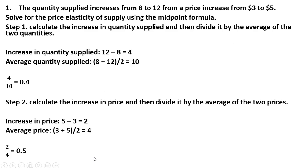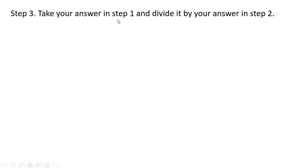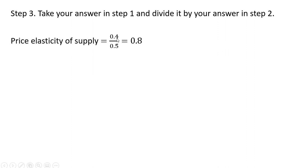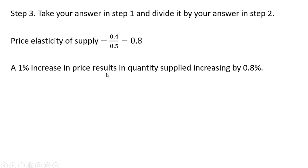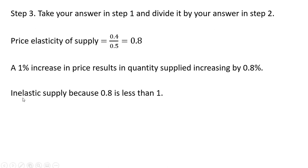In the final third step, we take the answer from step 1 and divide it by the answer from step 2 to get the price elasticity of supply. So 0.4 divided by 0.5 gives us 0.8. We have an inelastic supply in this example — a 1% increase in price results in quantity supplied increasing by only 0.8%. This is inelastic since the coefficient is less than 1.